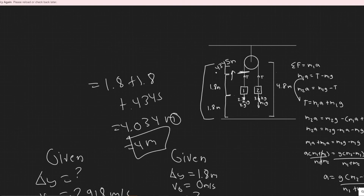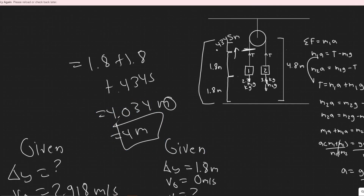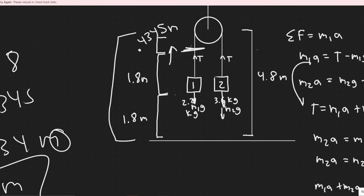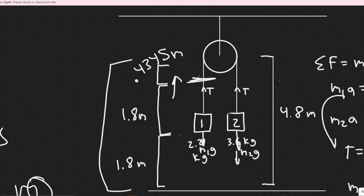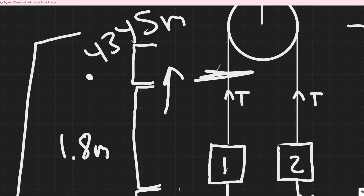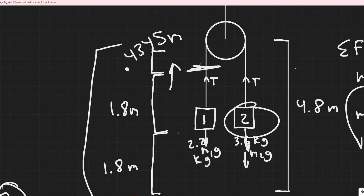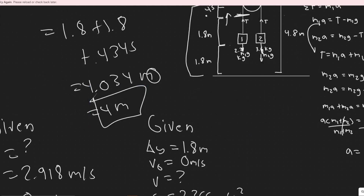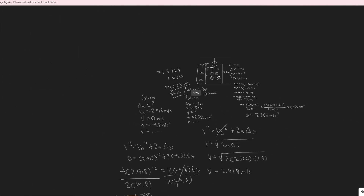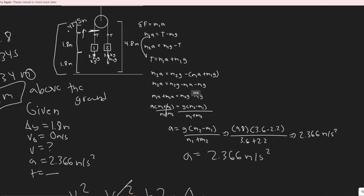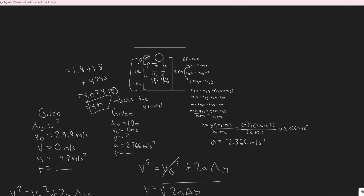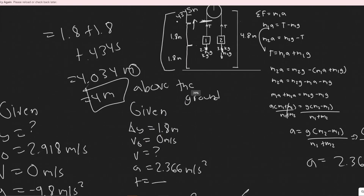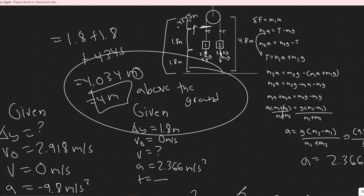So the maximum height is approximately 4 meters — you can round however your teacher prefers. To summarize: it starts 1.8 meters above the ground, travels 1.8 meters upward while the heavier block falls to the ground, and then travels an additional 0.4345 meters due to its launch velocity. We solved this by first finding the system's acceleration, then using two separate kinematic intervals. The answer is approximately 4.034 meters above the ground.